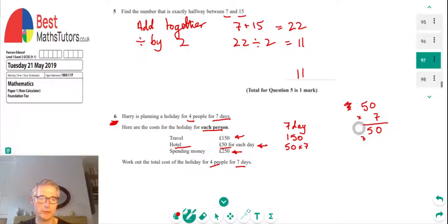And then we're going to add on the cost for the spending money, and that's 250 because that's for the full time that they're there. We're going to add all these together. So 150 plus 350 plus 250.